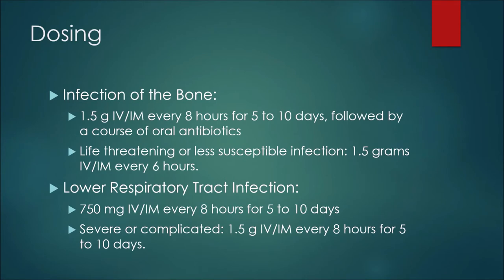For dosing with cefuroxime, when treating an infection of the bone we may see 1.5 grams given intravenously or intramuscularly every eight hours for five to ten days, followed by a course of oral antibiotics. If the infection is life-threatening or involves a less susceptible organism, we would give 1.5 grams intravenously or intramuscularly every six hours instead.